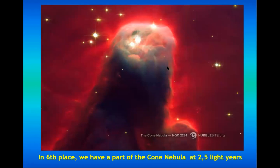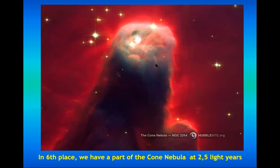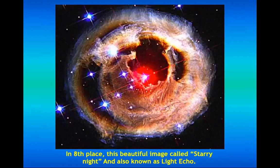In sixth place, a part of the Cone Nebula at 2.5 light years — it took two and a half years before the light reached our telescope. It looks like an ice cream cone nebula. In seventh position, a portion of the Swan Nebula located 5,500 light years away, described as an ocean of hydrogen with small quantities of oxygen, sulfur, and other elements — it even has rainbow-like colors.